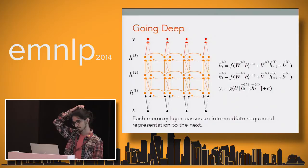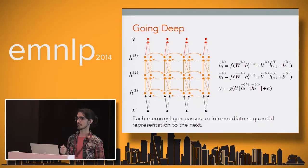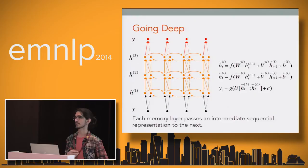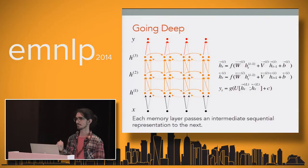Finally, we stack such bidirectional recurrent layers on top of each other to construct a deep bidirectional RNN. Intuitively, every memory layer is a separate intermediate processing step: it takes an input sequence, does a nonlinear transformation, and generates an intermediate representation, which is passed to the next layer for further processing. These kinds of networks have been shown to outperform shallow RNNs in a variety of tasks, and empirically different memory layers operate at different time scales — higher layers capture longer-term dependencies.